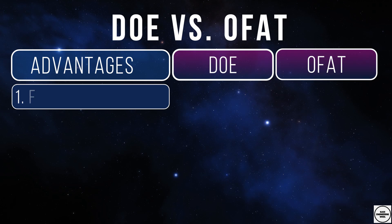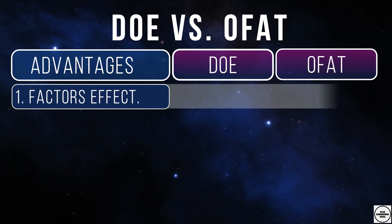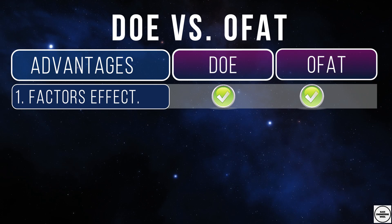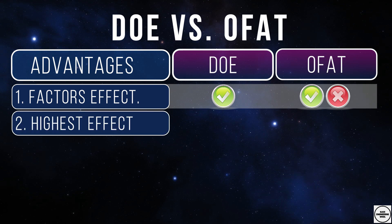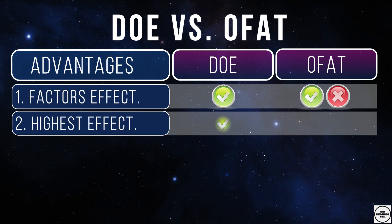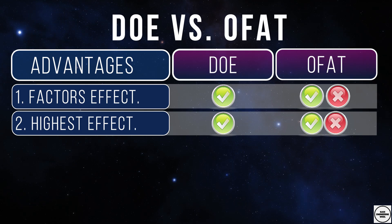The effect of the factors: in one factor at a time we can know if the factors affect the output or not, but we need a great number of trials. The factor with the highest effect: we can get it by using one factor at a time, but we also need a much greater number of trials.